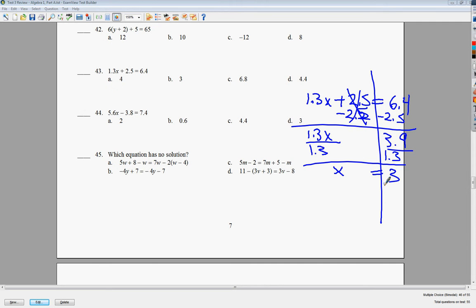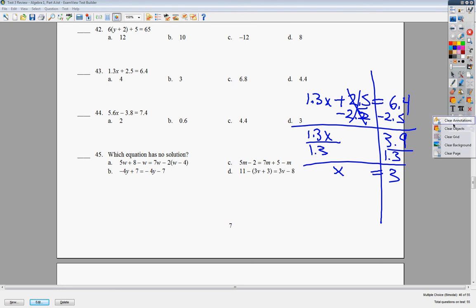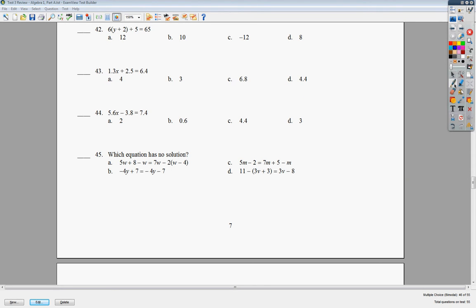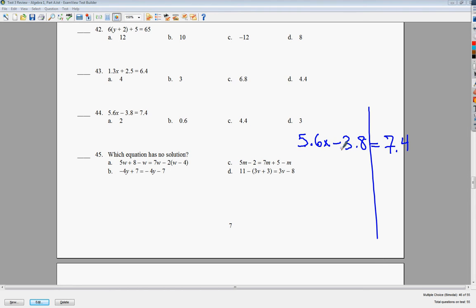So the answer to number 43 is b. The next one I'm going to look at is number 44. Very similar question. 5.6x minus 3.8 is equal to 7.4. Draw your line. Me, friend, friend to friend. To get rid of minus 3.8, I need to add 3.8. I end up with 11.2. This shows times, so I need to divide. And end up with the final answer of x is equal to 2. That's it. Pretty simple stuff for that one, so your answer to number 44 is a.